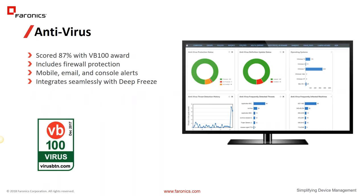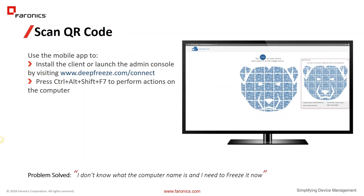We do have an award-winning antivirus solution. The VB100 test came back with a score of 87%. It includes firewall protection and is powered by the Bitdefender engine. It integrates seamlessly with Deep Freeze — on a frozen machine, the virus definitions will stick on that computer so they're not always getting removed on restart, so you don't have to do more work trying to thaw the definition files for your antivirus.